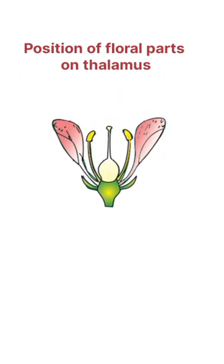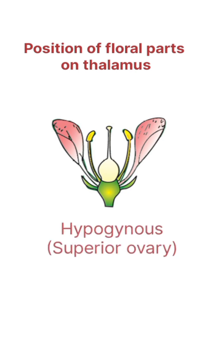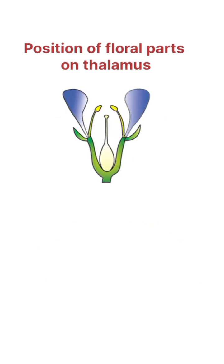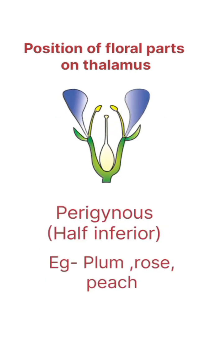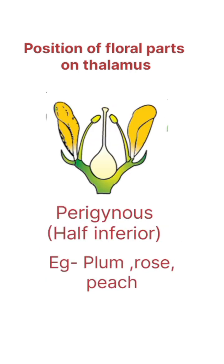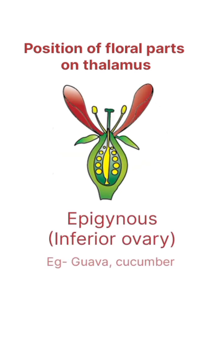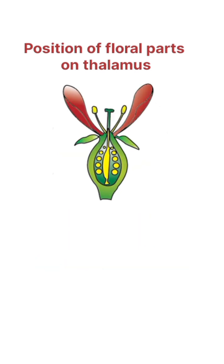18. Thalamus. 18. Hypogynous. 19. Perigynous. Epigynous — positions of floral parts relative to the ovary on the thalamus.